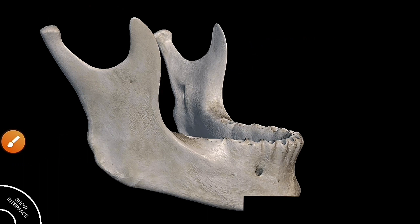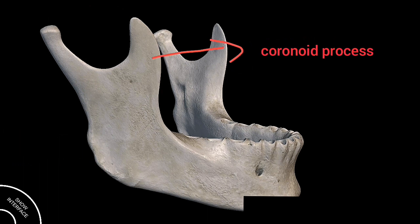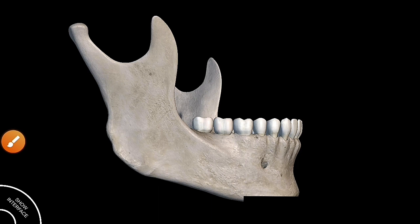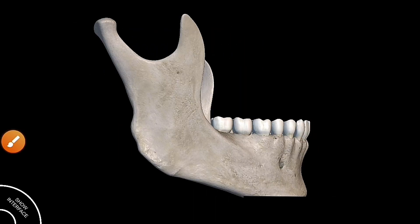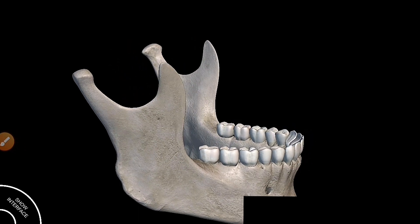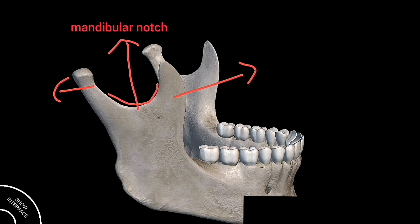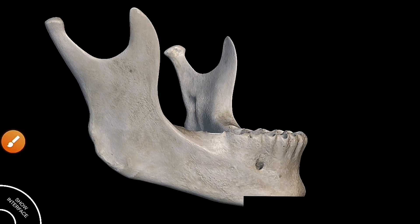The ramus has two processes: the coronoid process and the condylar process. The anterior border is thin and continuous with the oblique line, while the posterior border is thick, smooth, and covered by the parotid gland. The upper border is thin and has two processes — the front one is the coronoid process and the posterior one is the condylar process — separated by a deep concavity called the mandibular notch. The lateral surface of the mandible is flat, marked by oblique creases, and gives attachment to the masseter muscles.